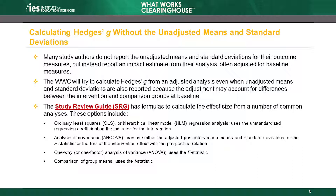Many study authors do not report the unadjusted means and standard deviations for each outcome measure. There are a variety of statistics they may report instead, often based on analyses that adjust for one or more baseline measures. Because these approaches account for possible differences between the intervention and comparison groups at baseline, the WWC prefers adjusted impacts to unadjusted impacts. The WWC Procedures Handbook includes formulas to calculate the effect size from statistics resulting from common analyses, including ordinary least squares, hierarchical linear models, analyses of variance, analyses of covariance, and tests of differences in group means. The WWC's Study Review Guide supports each of these calculations.